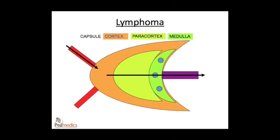Firstly, lymphoma. Before I go on to talk about it, I'm going to cover some physiological features of the lymphatic system, particularly lymph node structure. Lymph nodes, coming from the outside in, have a collagenous capsule, a cortex, a paracortex, and a medulla. The cortex contains lymphoid follicles and the B cell zone. The paracortex is a T cell zone, and the medulla is where the cords and sinuses come together to form the efferent lymphatic system that leaves the nodes.